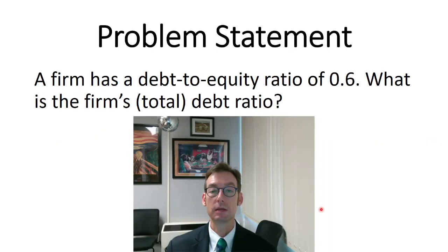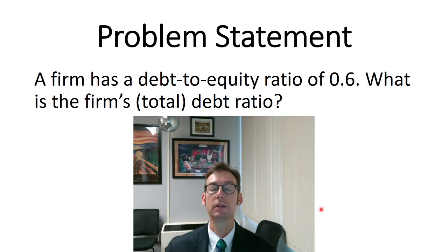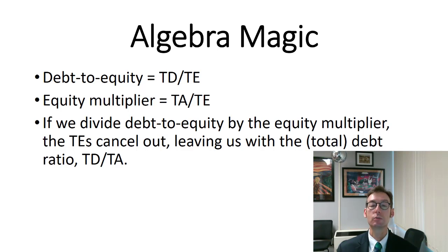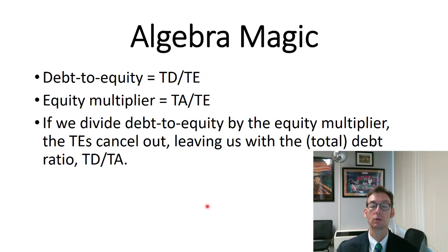Here's what the typical problem statement would look like: a firm has a debt to equity ratio of 0.6 — what is the firm's total debt ratio? This appears to cause quite a problem for many students. We're going to do some algebraic magic here. If we take the debt to equity ratio and divide by the equity multiplier, the total equities cancel out, and what's left over is total debt divided by total assets — which is exactly our total debt ratio.